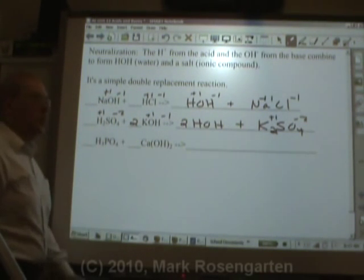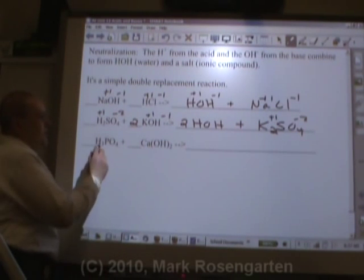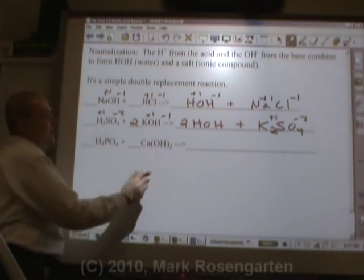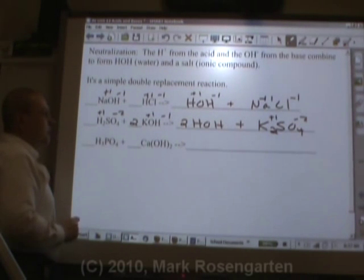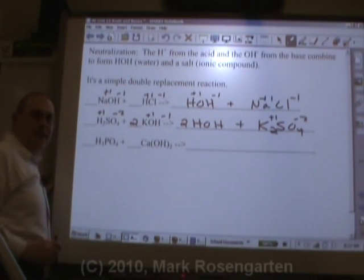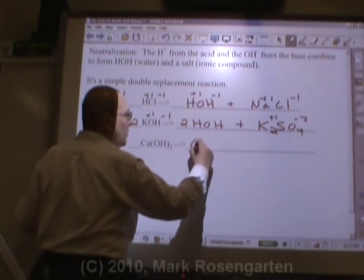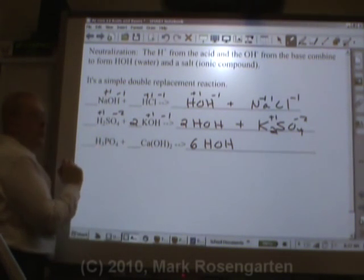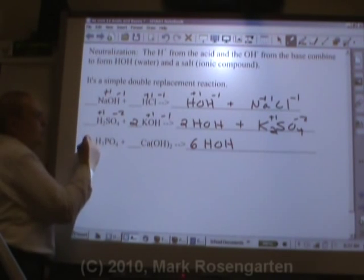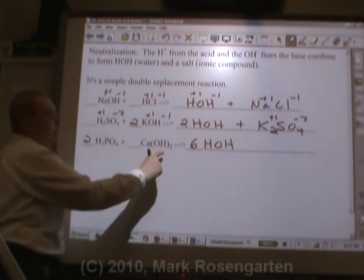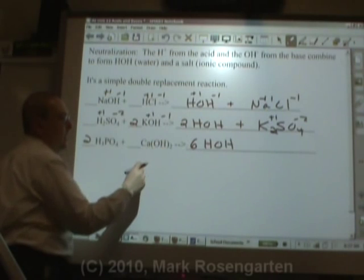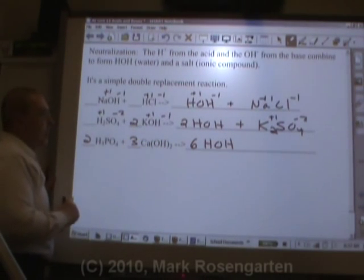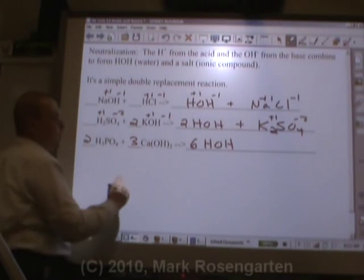Double replacement just works out really great this way. This acid contains three hydrogens. This base contains two hydroxides. So multiply them. Three times two is six. So when we're done, we're going to make six waters. All right. Well, how many Hs do we need to do that? Six. Two times three is six. How many OHs do we need to do that? Six.